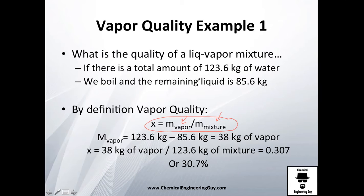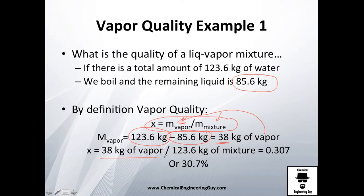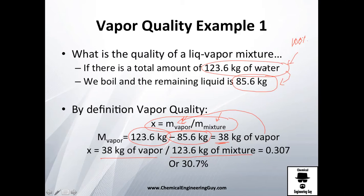The remaining liquid after boiling is 85.6 kilograms. So the mass of vapor is 123.6 minus 85.6, which equals 38 kilograms of vapor. Plugging into the formula: 38 kilograms divided by 123.6 kilograms total. We're supposing that at the beginning we had 100 percent water and we boiled part of it.